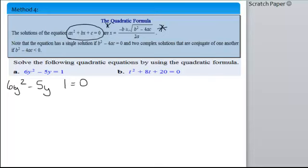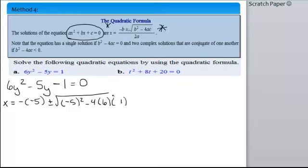Now, you're going to use 6 for a, negative 5 for b, and negative 1 for c. Plug it into this formula, and then just simplify it. So, x is equal to negative b, so negative of a negative 5, plus or minus the square root of b squared, so negative 5 squared, minus 4 times a times c, and that's all over 2a.